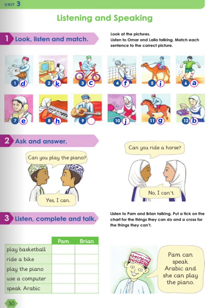I can play the guitar. Now number two: ask and answer according to the last activity, but this time you're answering by yourself if you can or cannot. For example, can you play the piano? Yes, I can. Can you ride a horse? No, I can't.